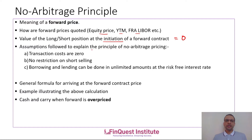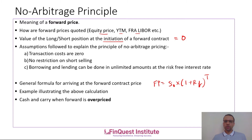We are now studying the cash and carry arbitrage concept, which is an extension of the no-arbitrage principle. To understand it, there are a few assumptions to keep in mind: transaction costs are assumed to be zero, there is no restriction on short selling, and borrowing and lending can be done at unlimited amounts at the risk-free rate. The general formula for arriving at the forward contract price is: Fp = S0 × (1 + RF)^T, where S0 is the spot price today, RF is the risk-free rate, and T is the time to maturity.